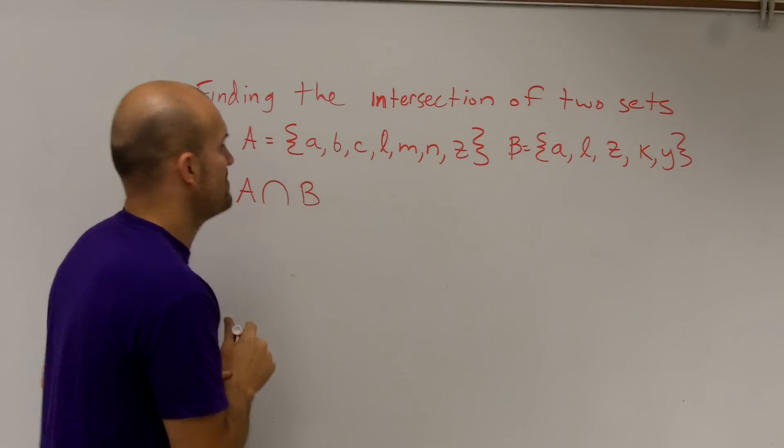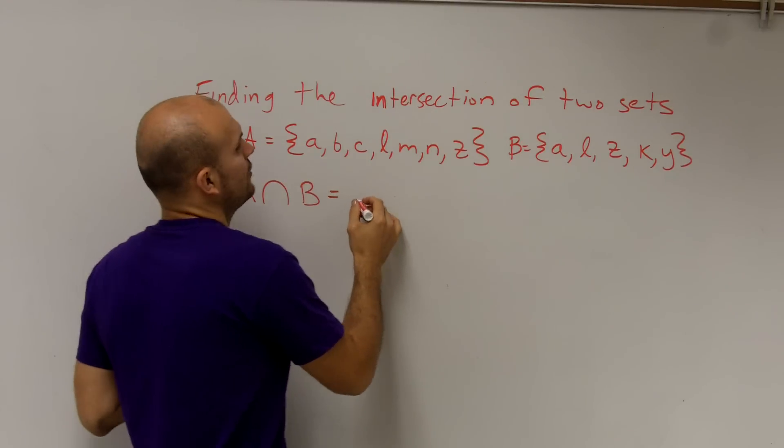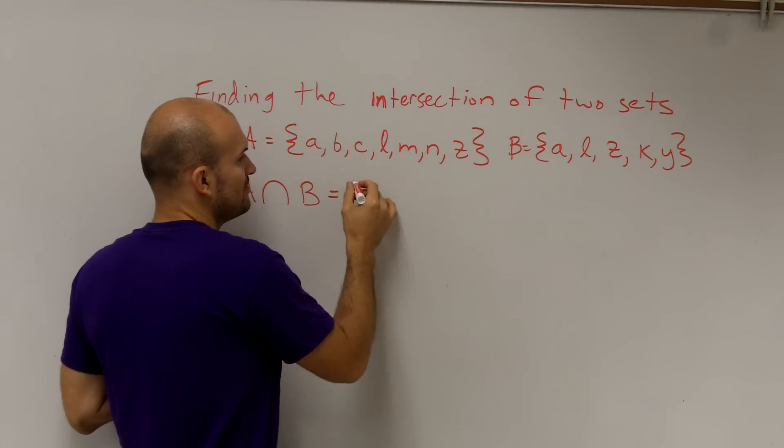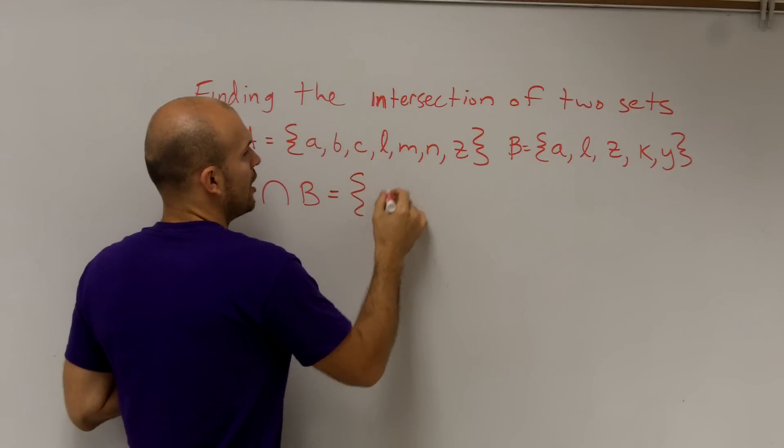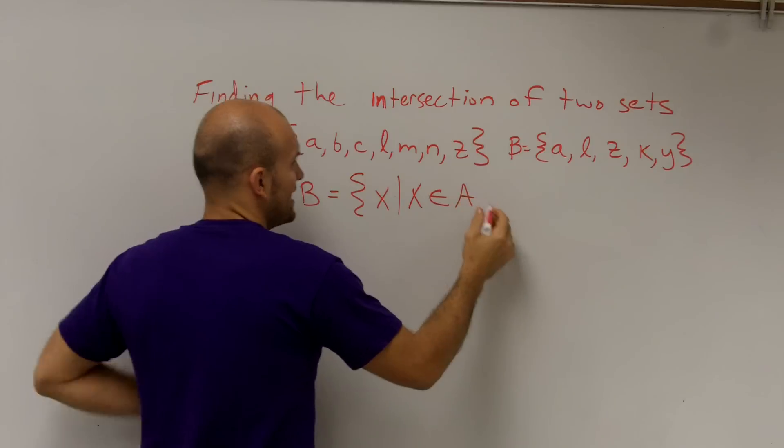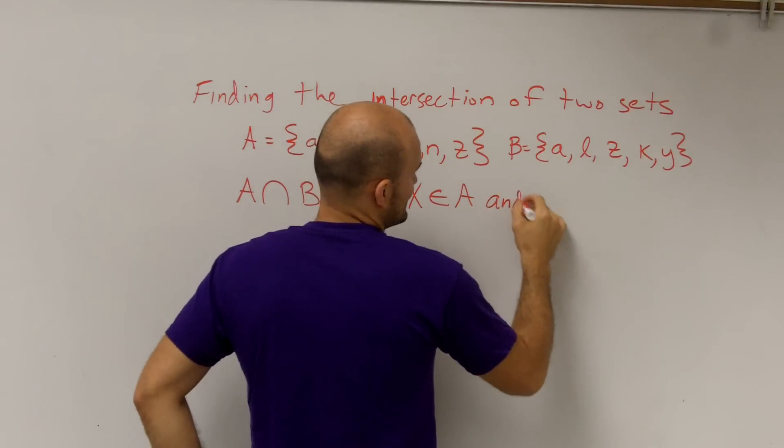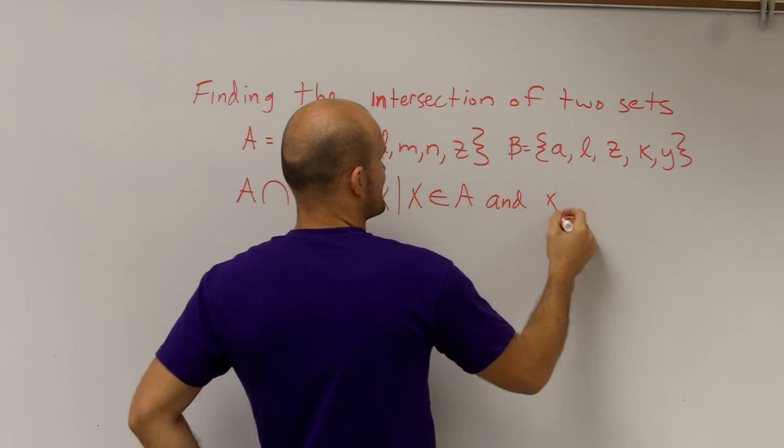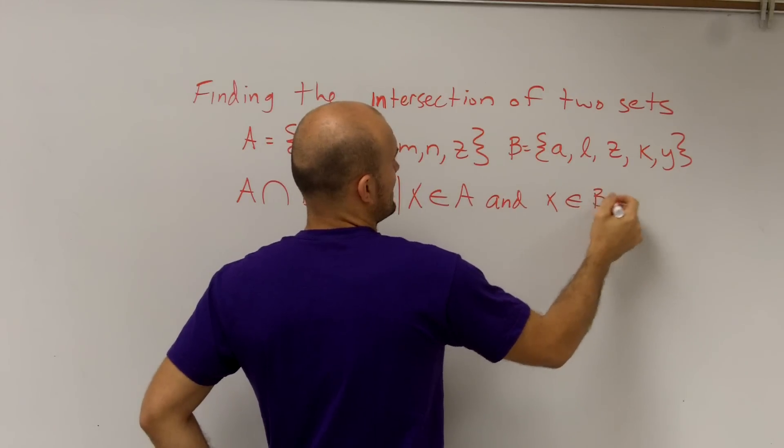But for here, what it mainly states is all the elements. The intersection of A union B simply means all the elements X such that X is contained in A and all the elements X that are contained in B.